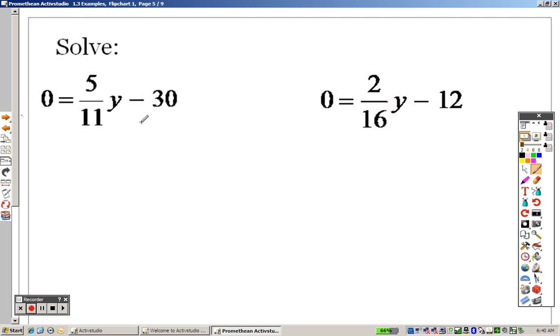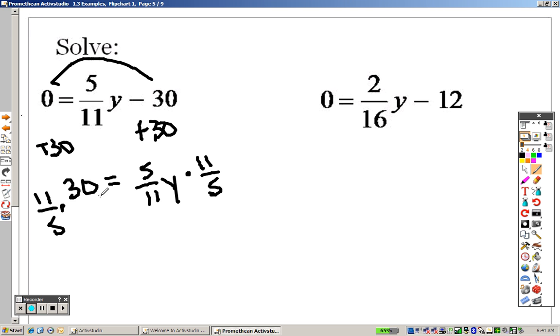Same concept with this one. I need to get the number onto that side. So I'm going to add 30 to both sides. So I get 30 equals 5 over 11y. So to get rid of the fraction, you multiply by the reciprocal on both sides. I can divide a 5 out of both those. 30 divided by 5 is 6. So really, I'm saying, and those are cancelled out. Really, I'm saying, what is 11 times 6? That's 66. So y is 66.